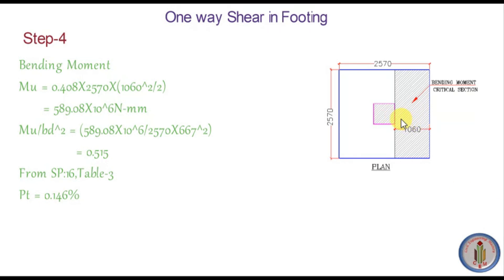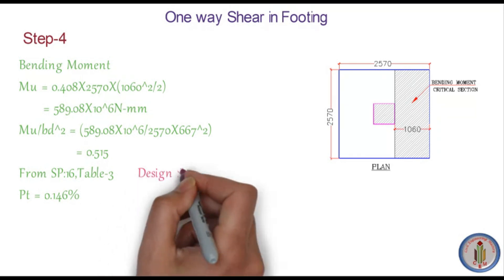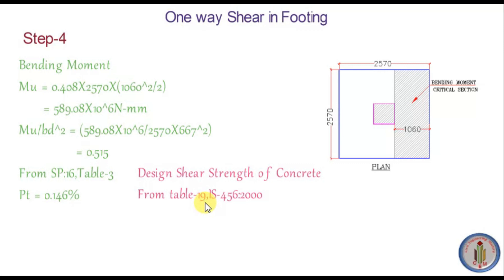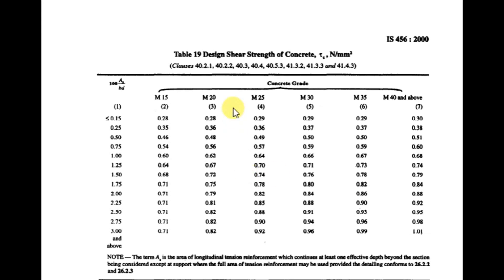The critical section for bending moment is at the face of the column, from which we calculated the bending moment and PT value of 0.146. Using Table 19 from IS 456-2000 with PT rounded to 0.15 and concrete grade M25, we find the design shear strength of concrete tau_c = 0.29 N/mm².